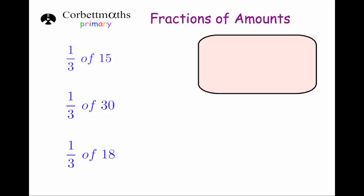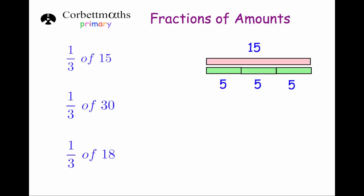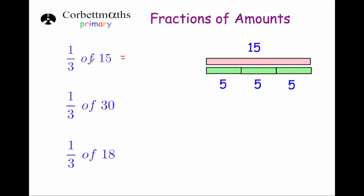Now let's work out a third of some numbers. So a third of 15 — if I share 15 equally between 3 people, each person gets 5. So a third of 15 is 5. The way to work that out is we just take our 15 and divide it by 3. So if you want to work out a third of something, you divide by 3. So 15 divided by 3 is 5.